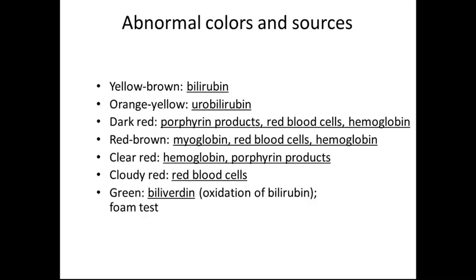Red-brown color can indicate myoglobin, red blood cells, or hemoglobin in the urine. Clear-red could indicate hemoglobin or porphyrin products. Cloudy-red could indicate whole red blood cells — not damaged red blood cells being excreted. Green means biliverdin, which is an oxidization of bilirubin. We often perform a foam test; bilipigment is formed in the breakdown of hemoglobin and converted to bilirubin.